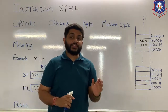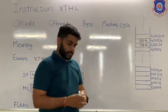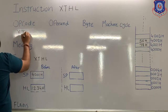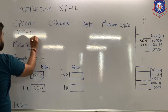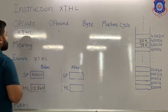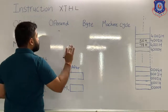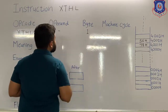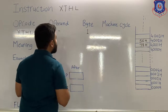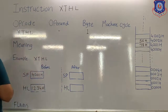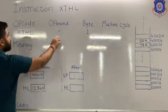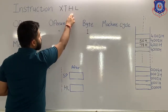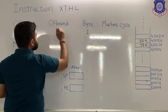Now we are going to see the instruction XTHL. For this instruction, no operand is present — no data is present. It means this instruction is of only one byte. XTHL means exchange the content of the HL pair with the stack.